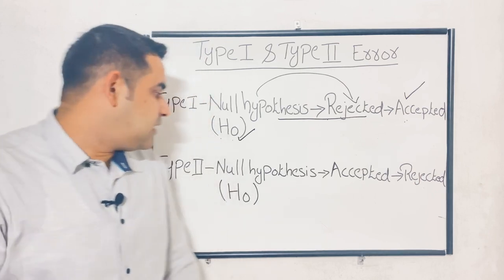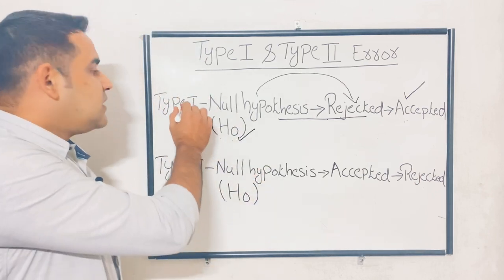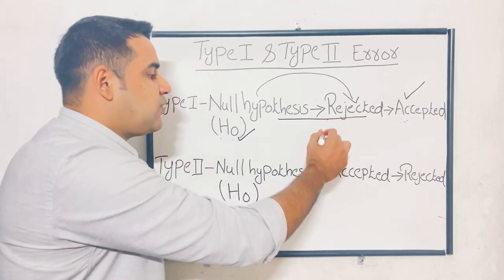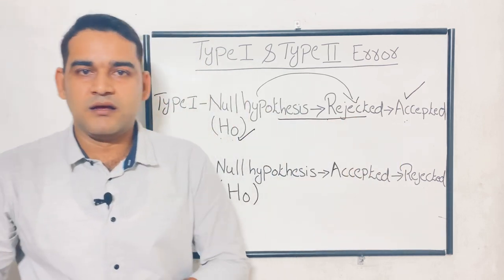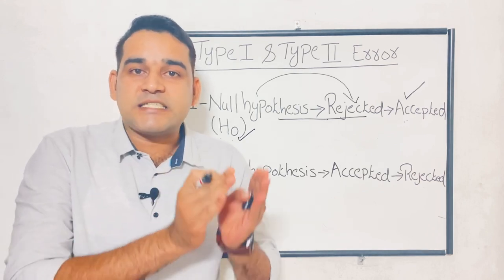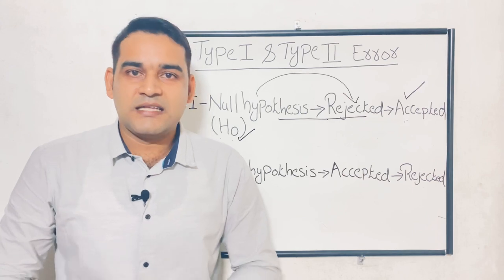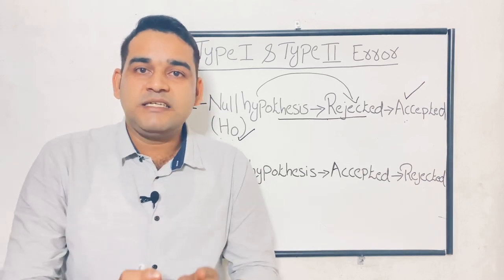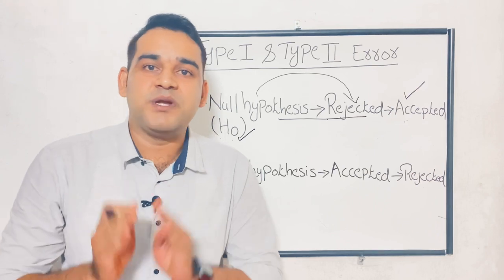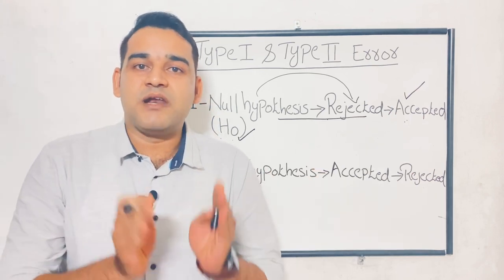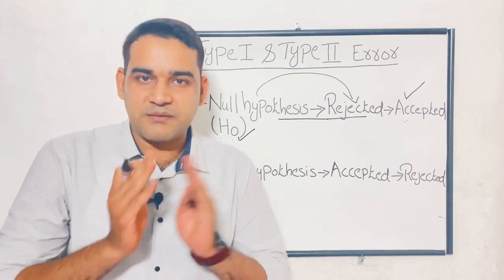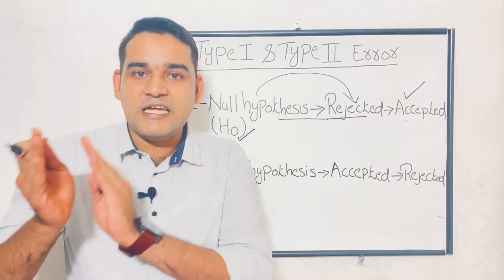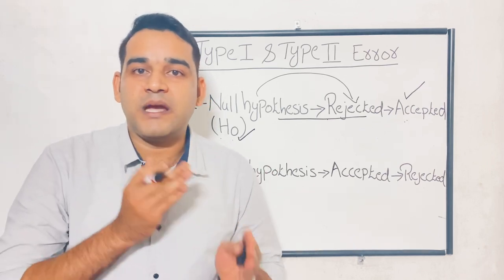What is type 2 error? Type 2 error is just opposite to type 1 error. Here, instead of rejecting a null hypothesis, you accepted it. For example: there is no relationship between eating ice cream and throat pain — this is a null hypothesis. But actually there is a relationship between eating ice cream and throat pain, because some children will get throat pain after taking ice cream.